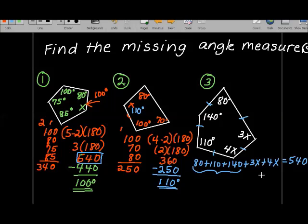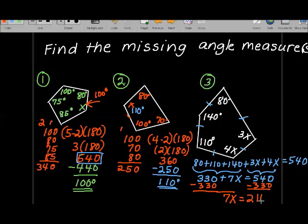Let me do a little simplifying. I've got 80 plus 110, that's 190, and 190 plus 140 is 330. 3x plus 4x is 7x, and that equals 540. I'm going to subtract 330 from both sides. 7x equals 210. It looks to me like x equals 30.